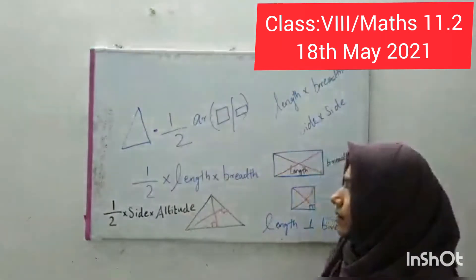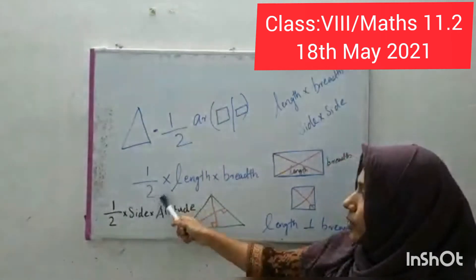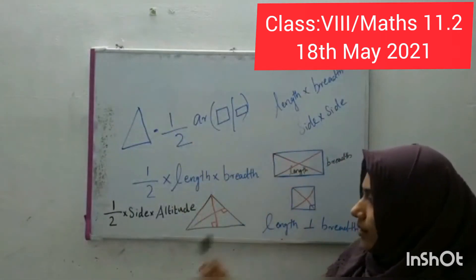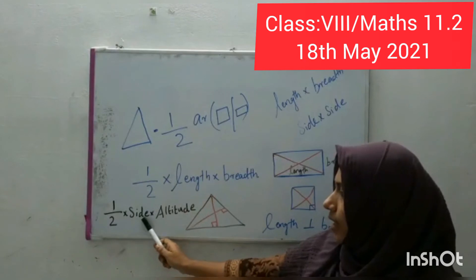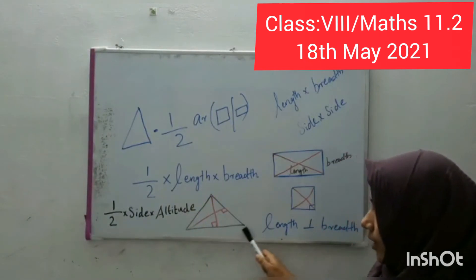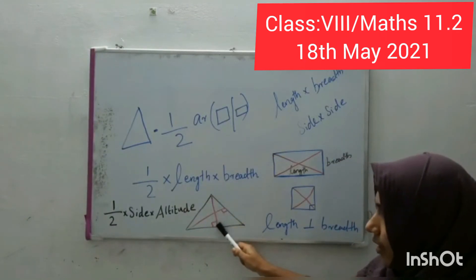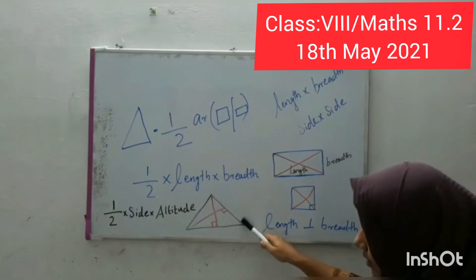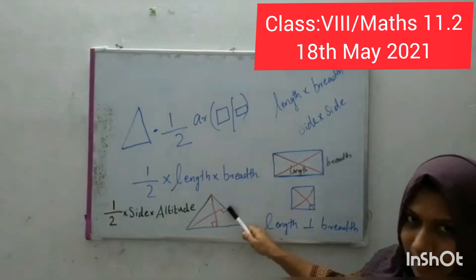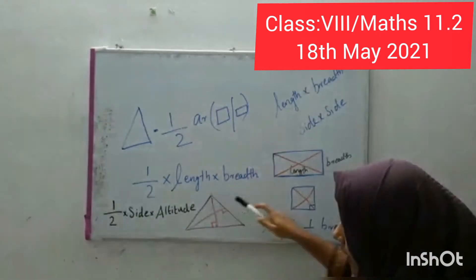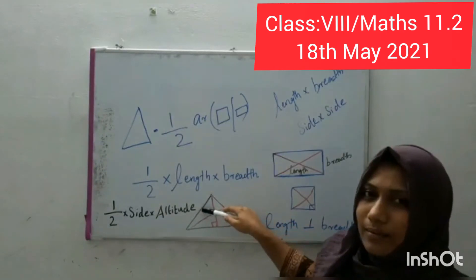Dear students, the area of a triangle is half into length into breadth, or we can say it as half into side into altitude. For this side, the altitude is this one. For this side, altitude is this one. For this side, the altitude will be this line.